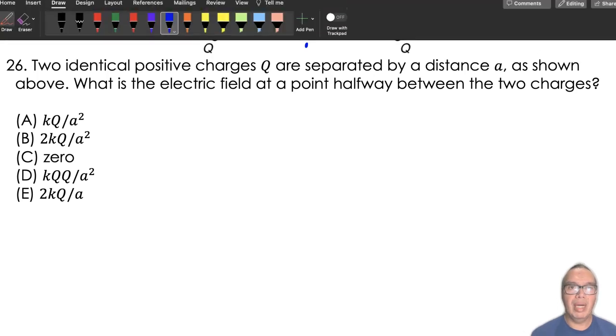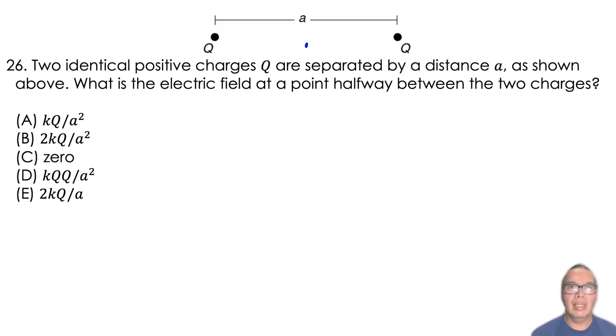Always keep in mind that the electric field is a vector at each point in space. If the charge causing the field is positive, the field vector points away from the charge.